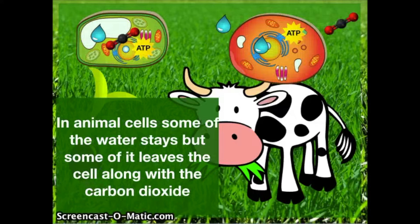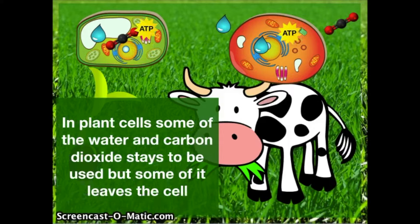In animal cells, some of the water stays, but some of it leaves the cell along with the carbon dioxide. In plant cells, some of the water and carbon dioxide stays to be used, but some of it does leave the cell.